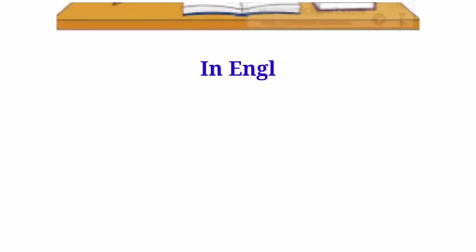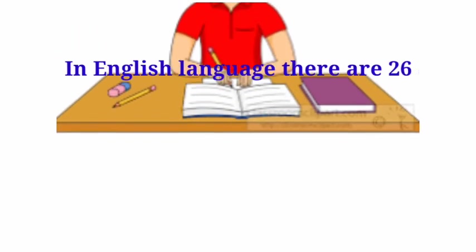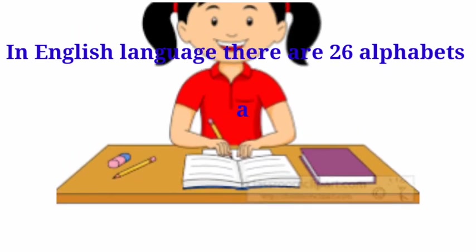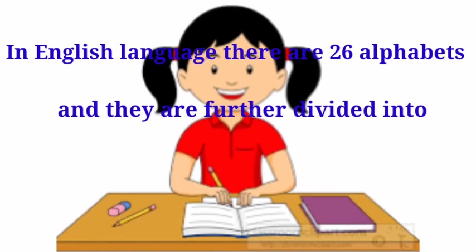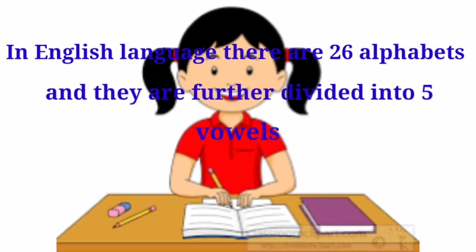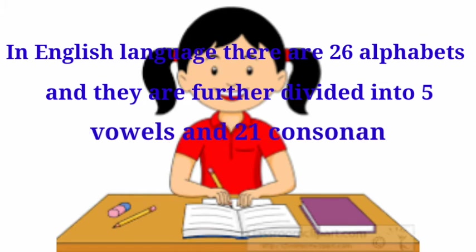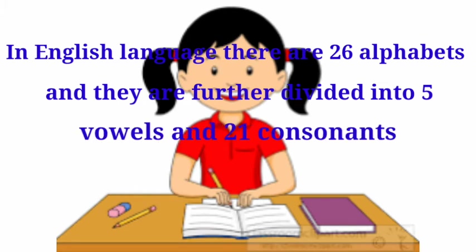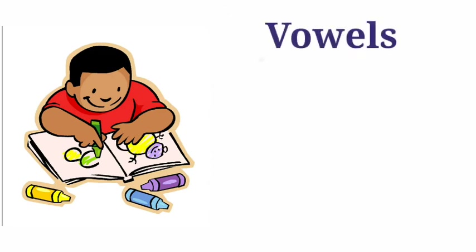In English language there are 26 alphabets and they are further divided into five vowels and 21 consonants. Vowels: A, E, I, O, U.